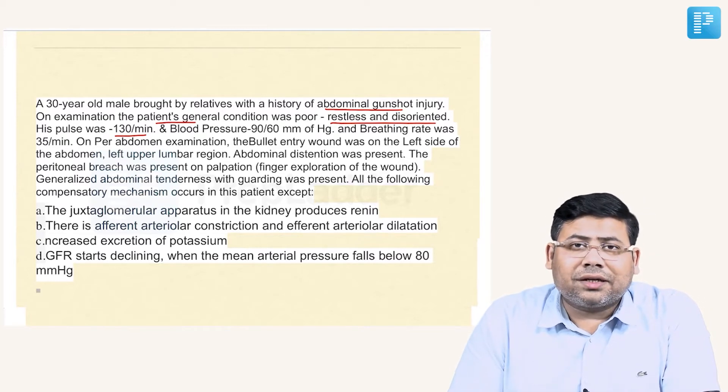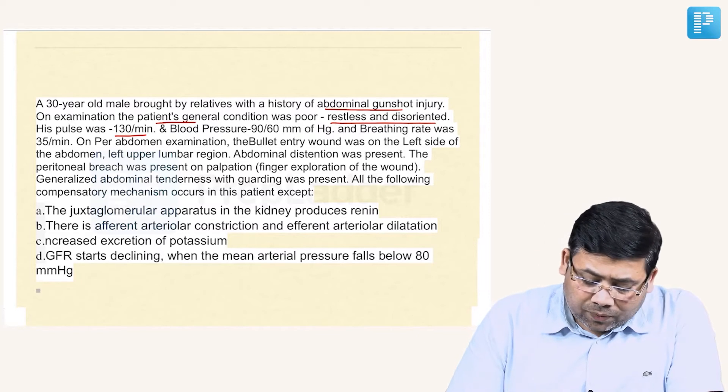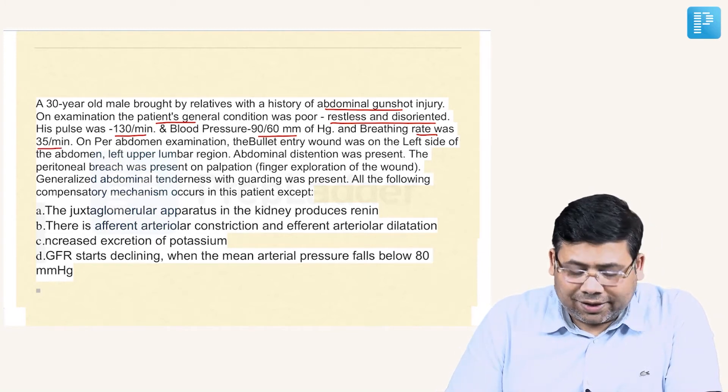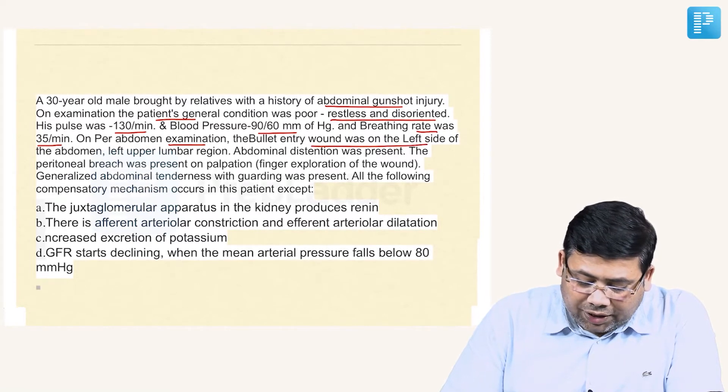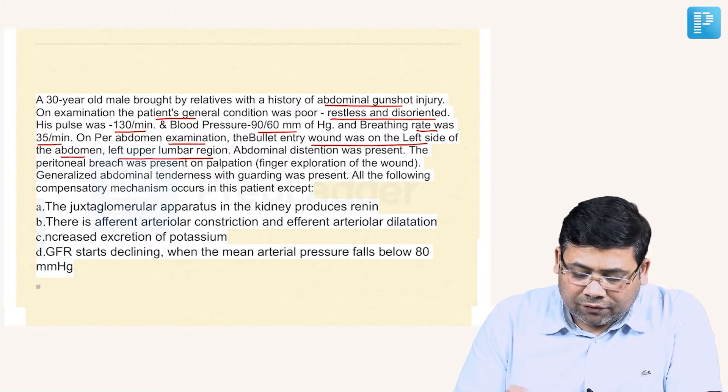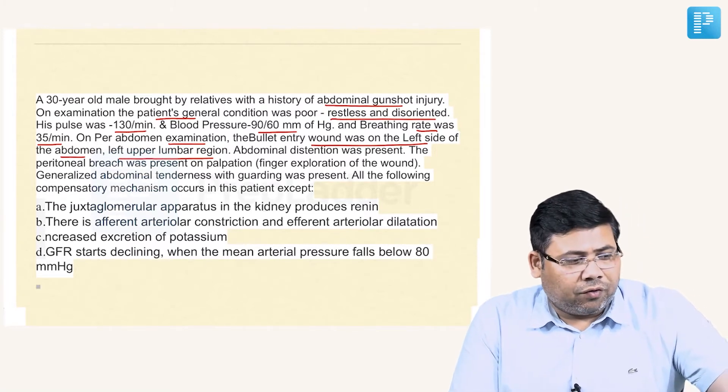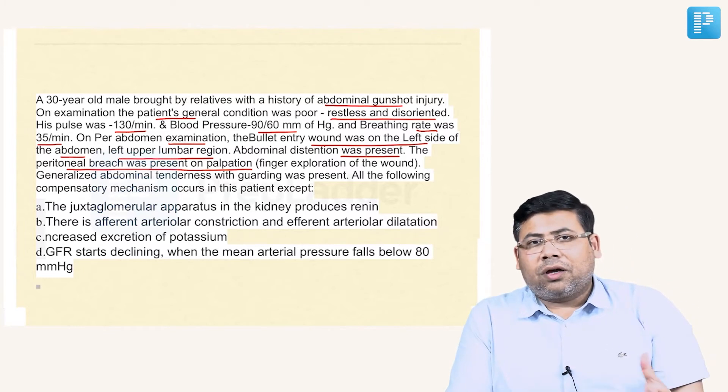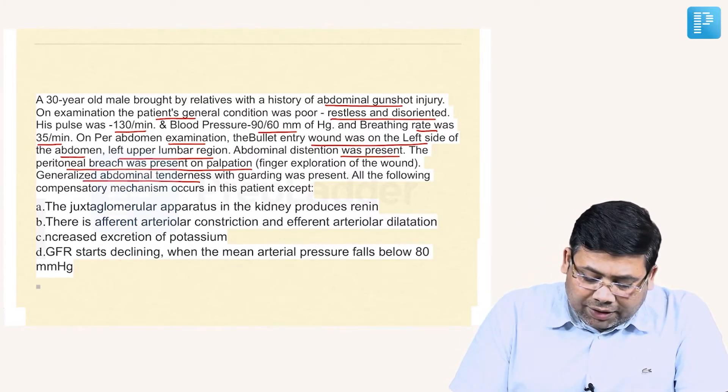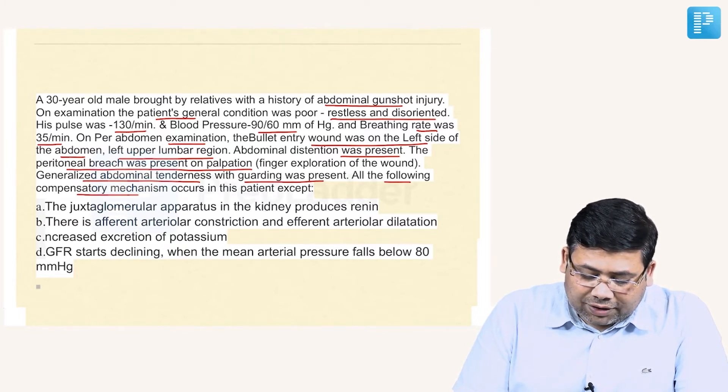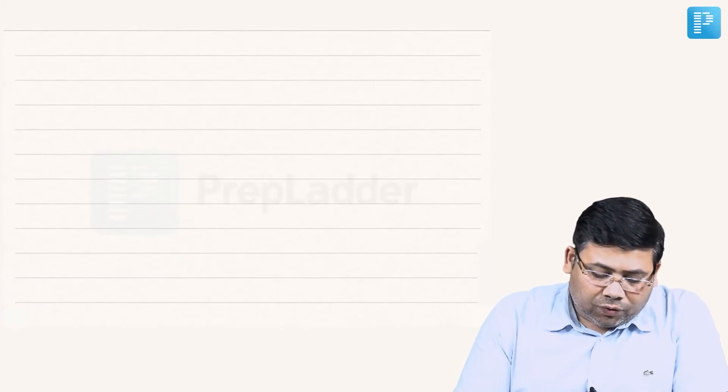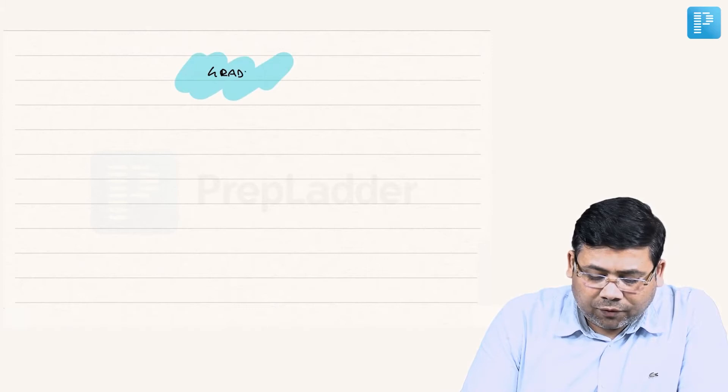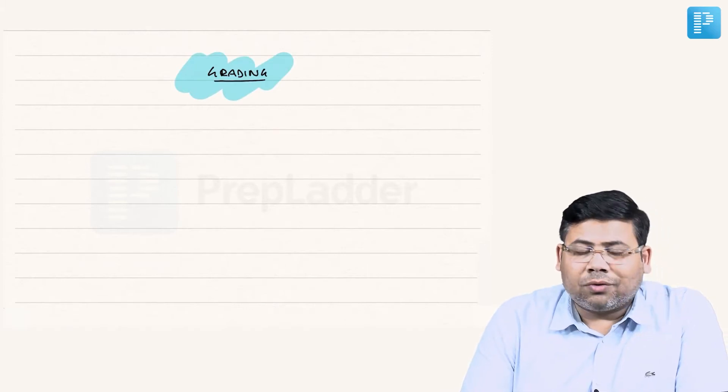The pulse was 130, indicating grade 2 or 3 hypovolemic shock. Blood pressure shows hypotension, grade 3 is evident. Breathing rate was 35, confirming grade 3. Per abdomen examination, the bullet entry was found on the left side of the abdomen and left upper lumbar region. Abdominal distension was present, peritoneal breach was present on palpation, and generalized abdominal tenderness with guarding was present. This is a patient of grade 3 hypovolemic shock.